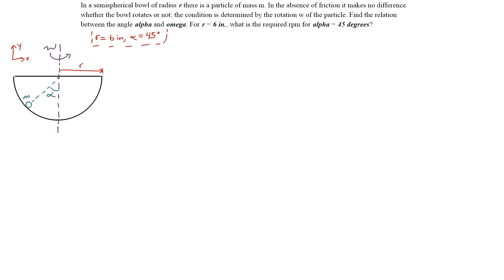What is the required RPM for alpha equaling 45 degrees? Probably the trickiest part of this problem is understanding where the centripetal acceleration is pointing. We'll get to that when we do the free body diagram.